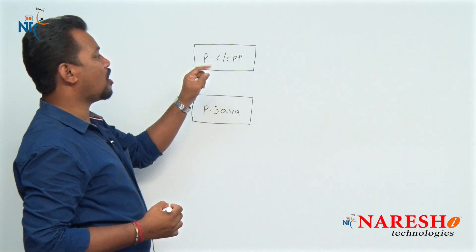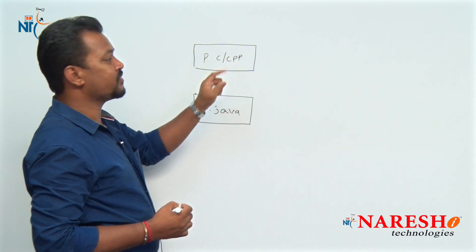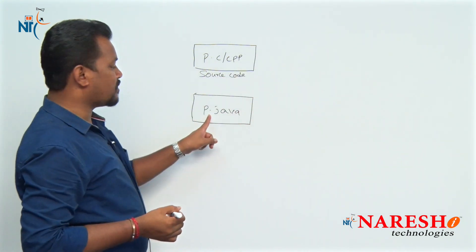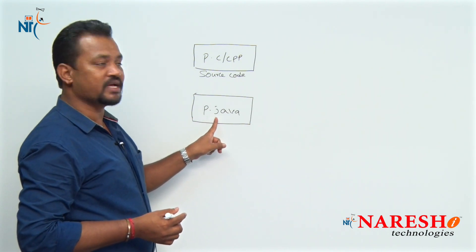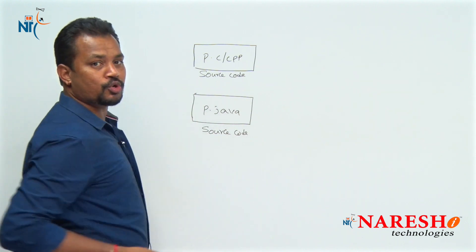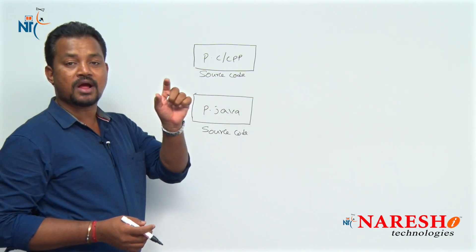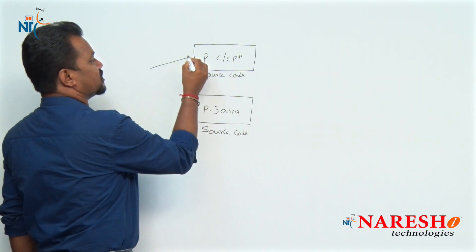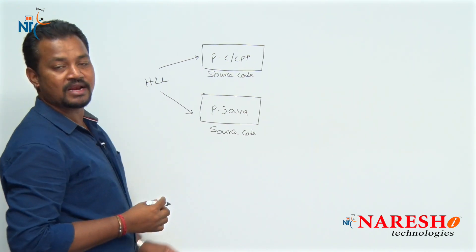Whenever we write a program in C or C++, we save that program with extension .c or .cpp — we call this source code. The program written in Java is saved with extension .java — we call it source code. The source codes used for writing C, C++, or Java programs contain user-understandable code, so we can understand these programs very easily. Because of this reason, these programs come under high-level language programs.